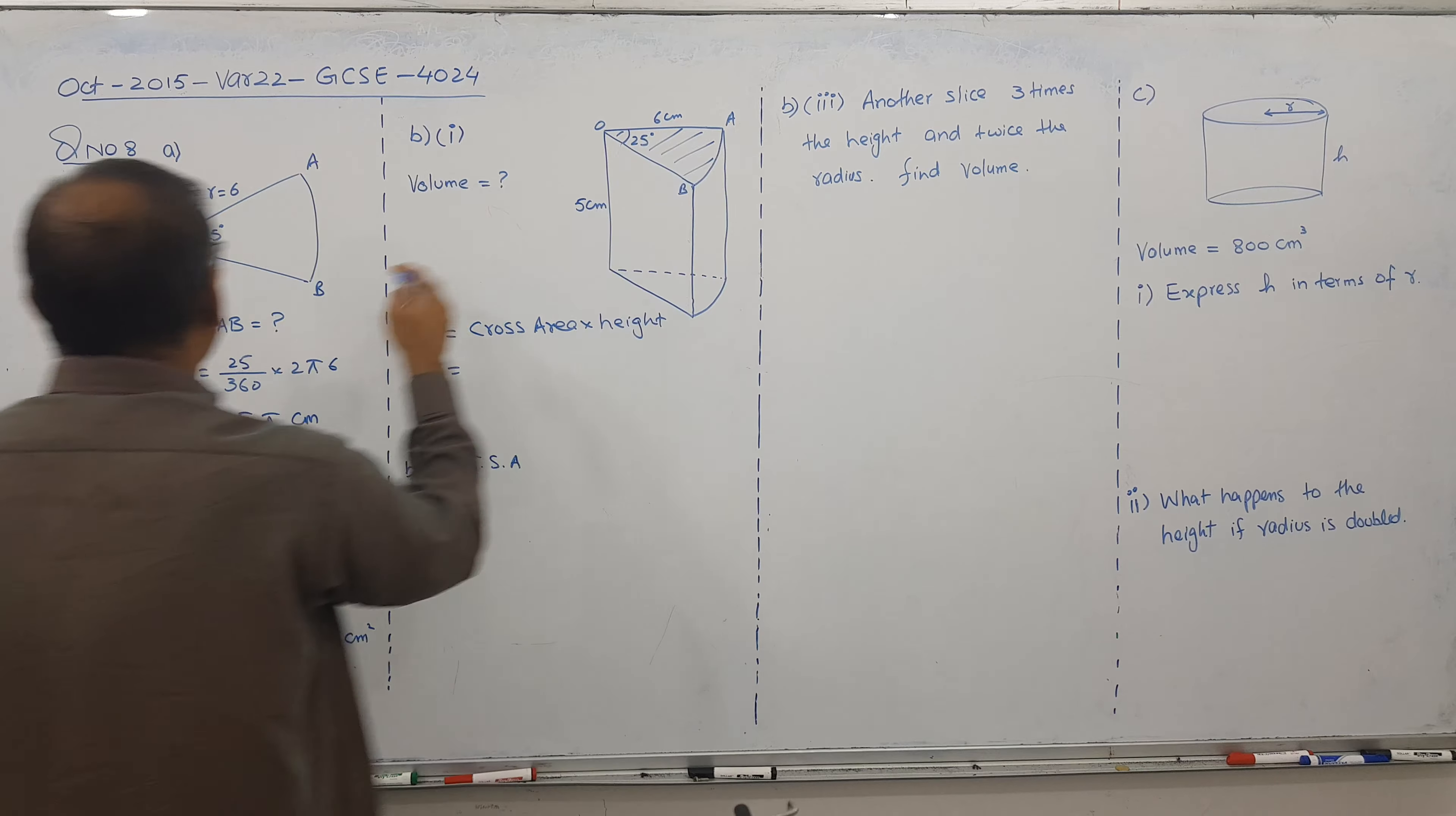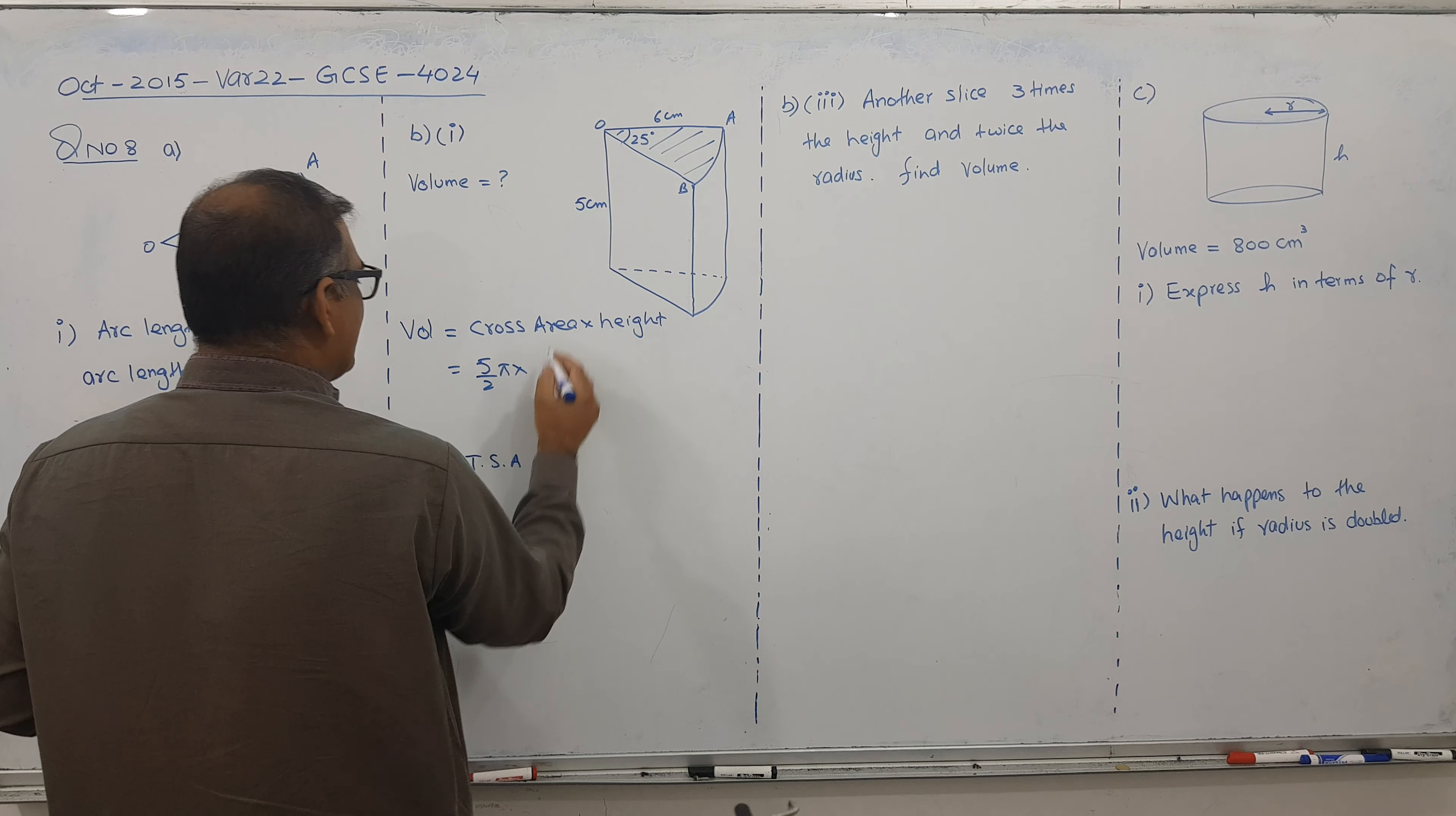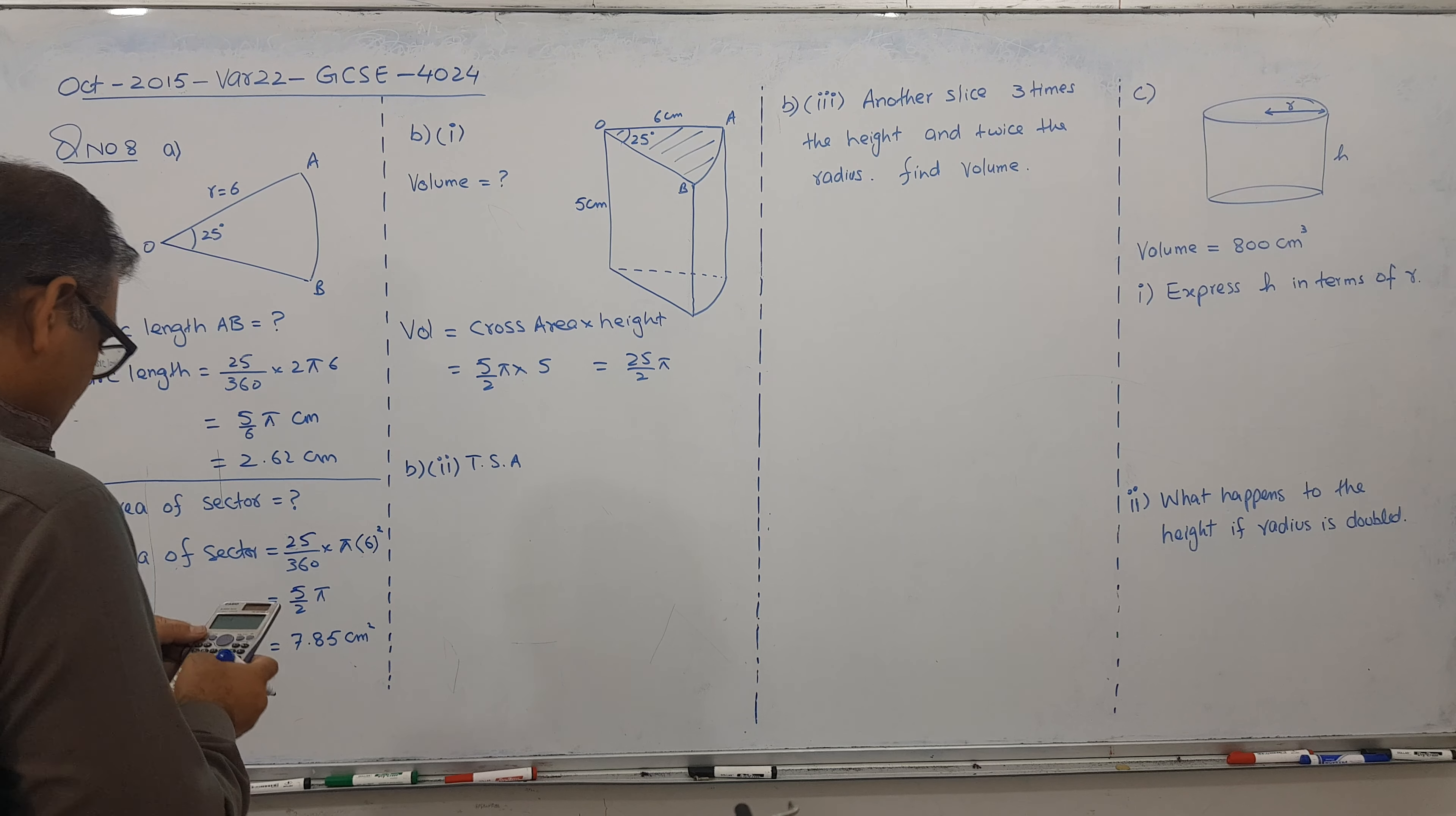This is called cross area. And cross area we have here. I will not use it. I will use this one. So 5 by 2 pi. And the height is 5. So I am getting 25 by 2 pi.